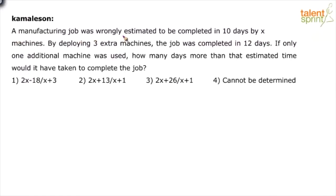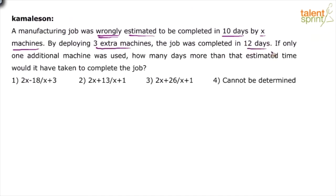A manufacturing job was wrongly estimated to be completed in 10 days by X machines. So there were X machines and it was wrongly estimated that it could be completed in 10 days — which means it actually cannot be completed in 10 days by X machines. By deploying 3 extra machines, the job was completed in 12 days. So instead of X machines, they used X plus 3 and completed the job in 12 days.